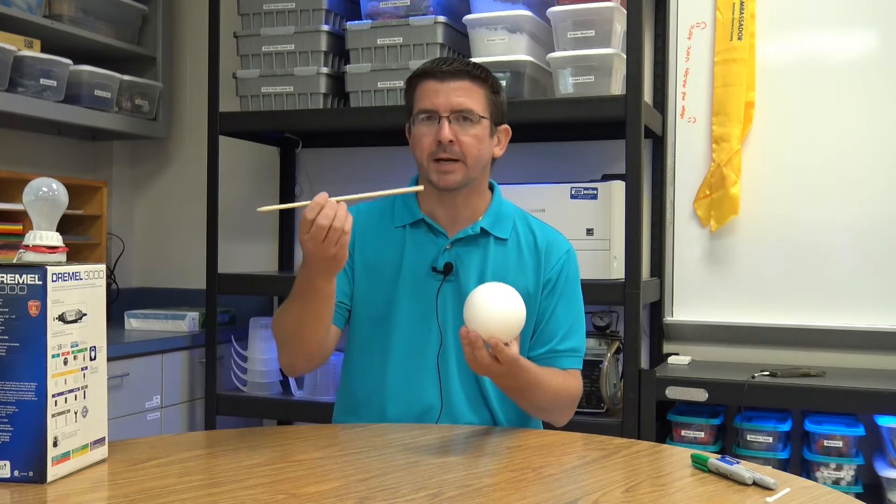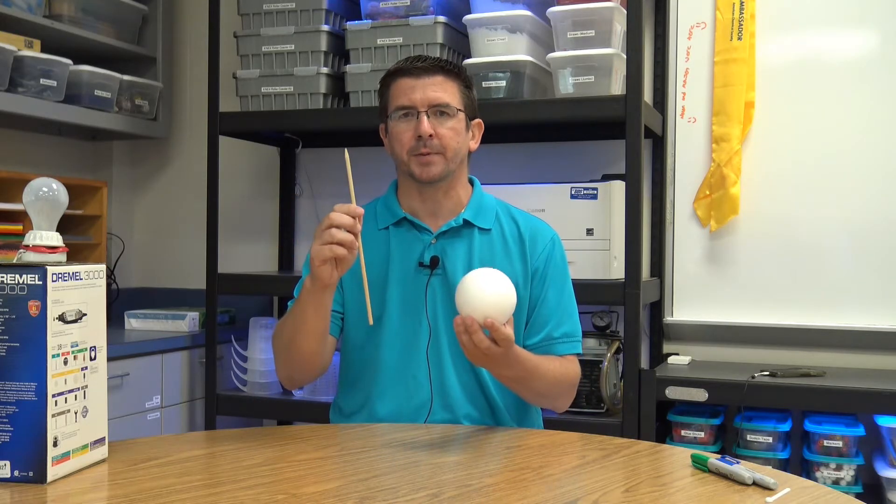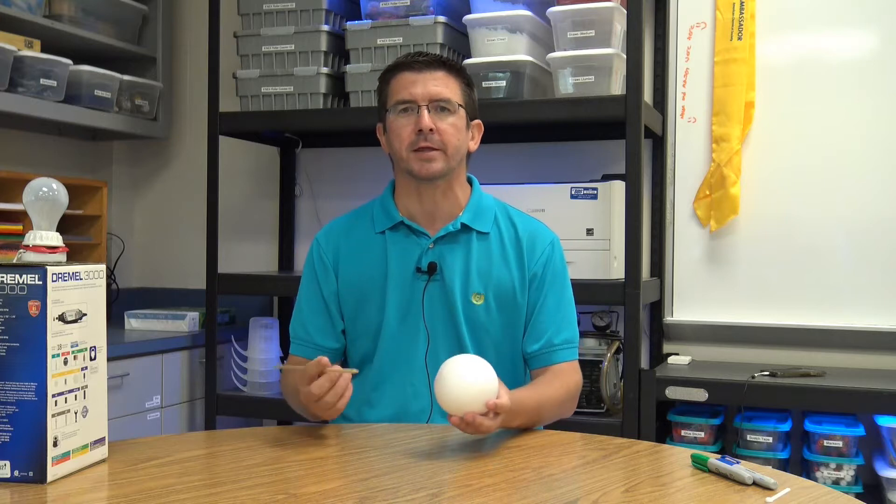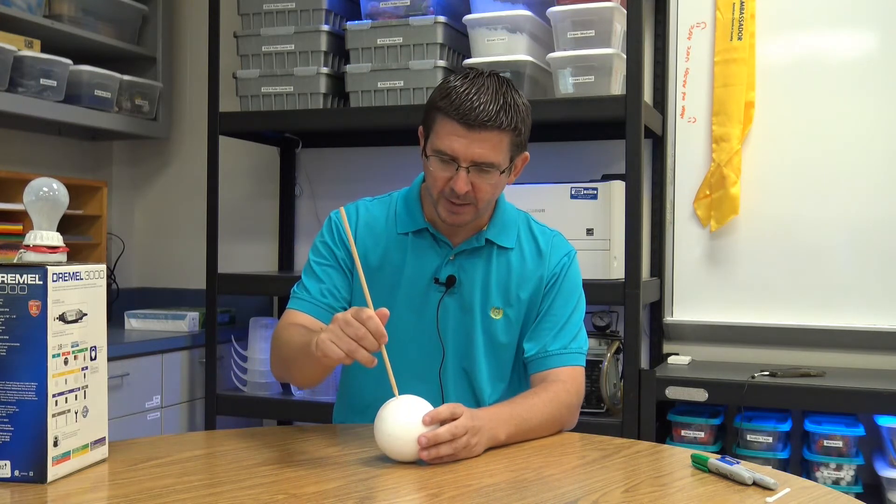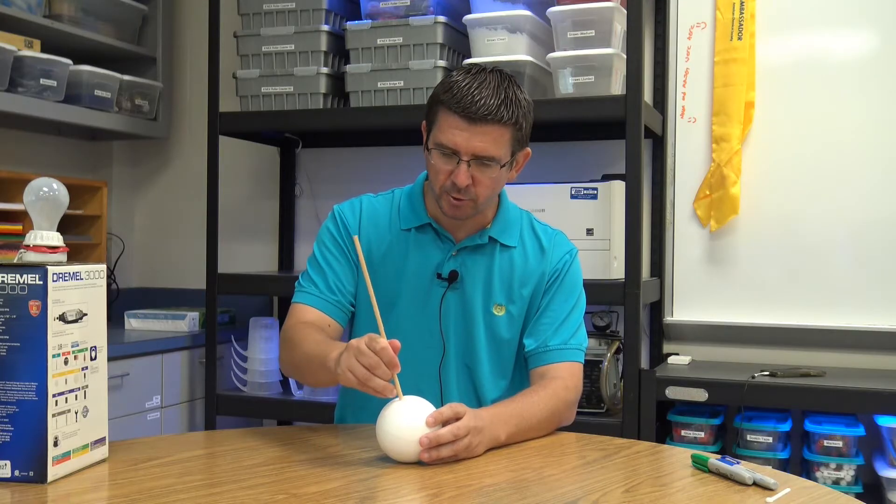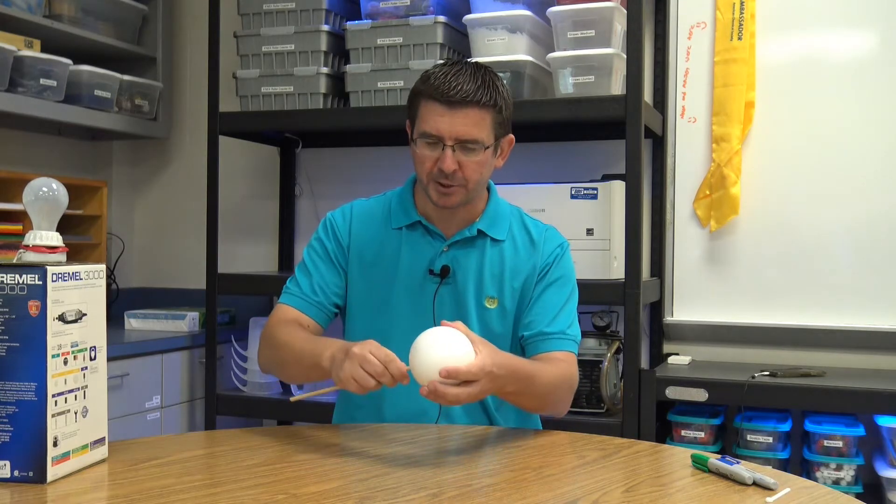We need a styrofoam ball, and I'm going to use a dowel rod that I sharpened the end of. You could use a pencil or anything if you wanted to try this at home. And we're just going to take the dowel rod and stick it right into the center of our styrofoam ball so that I can hold it more easily.